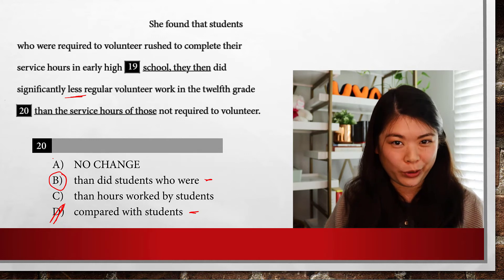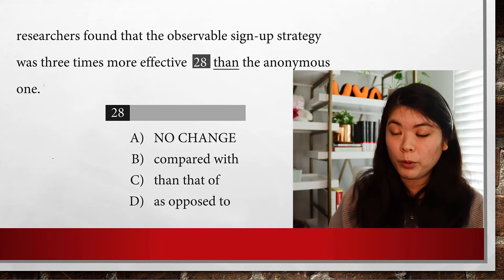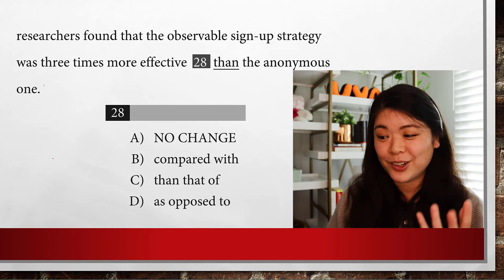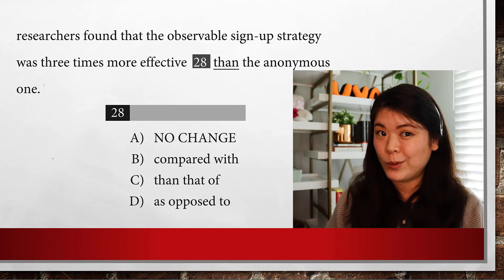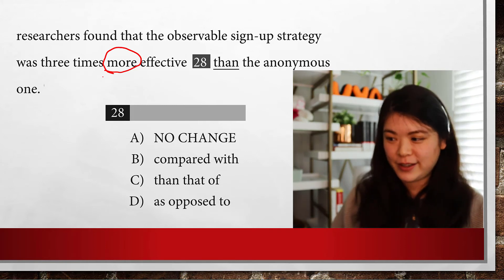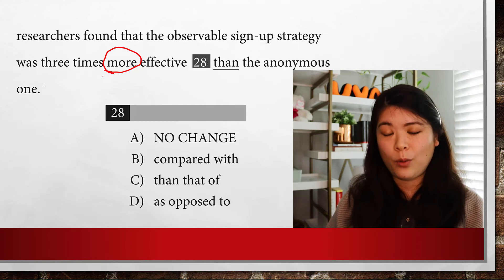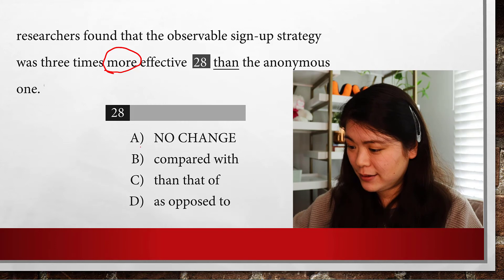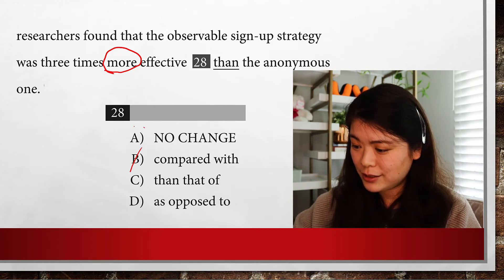Let's see how much of that you absorbed, because we're going to try one more. This sentence says: researchers found that the observable sign-up strategy was three times more effective than the anonymous one. Clearly another comparison question. Do we see a comparative adjective here? Our comparative adjective is 'more' — specifically 'more effective.' So what are we comparing? We're comparing the observable sign-up strategy to the anonymous one. We have 'more,' so we have a comparative adjective, which means it is not going to be B. But we're already comparing apples to apples — sign-up strategy to sign-up strategy. So the answer here is just 'than.'